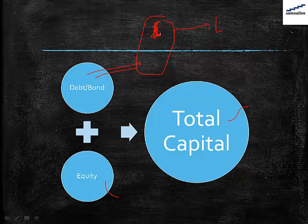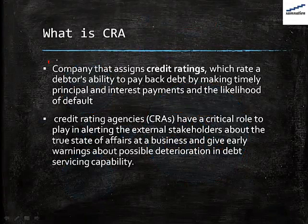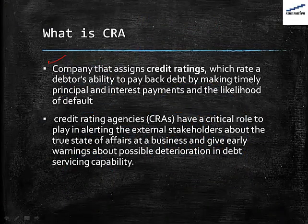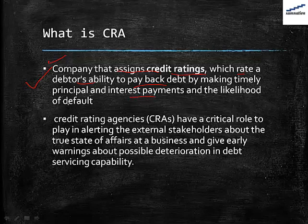Credit rating agency basically creates confidence among loan providers. The credit agency gives the company a rating — it can be A, A+, AA, AA minus, triple A — according to various notations. The credit agency gives the company a rating according to its capability to repay that loan. As written here, CRA — credit rating agency — basically assigns the credit rating. This credit rating rates a debtor's ability to pay back that debt by making timely principal and interest payments. That is the role of the credit rating agency — to provide the credit rating and also the likelihood of default.